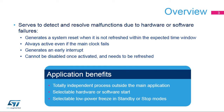The Independent Watchdog is used to detect and resolve malfunctions due to hardware or software failures. It generates a reset sequence when it is not refreshed within the expected time window. An early interrupt can be generated as well. Since its clock is an independent 32 kHz Low-Speed Internal RC Oscillator, or LSI, it remains active even if the main clock fails.